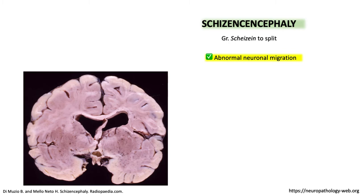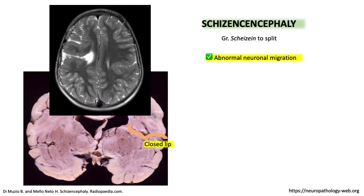Now, if the cleft, as you can see here, is closely opposed together and does not communicate with the ventricle, this is what we call a closed-lipped schizencephaly. Here is an example, as you can see here on the left side.